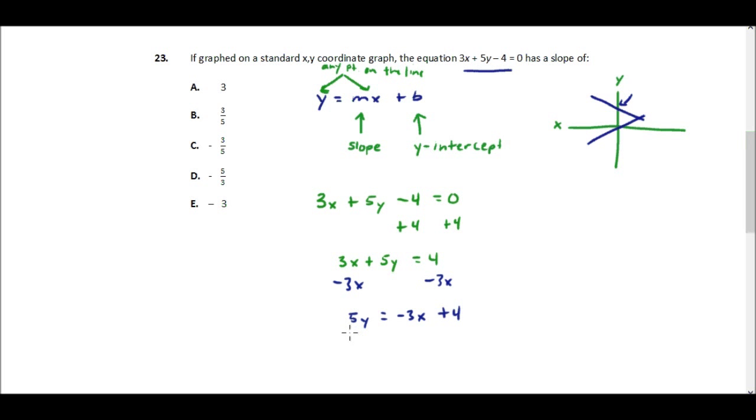And then finally, I will divide both sides by 5, and I'll end up with y equals negative 3 fifths x plus 4 fifths.